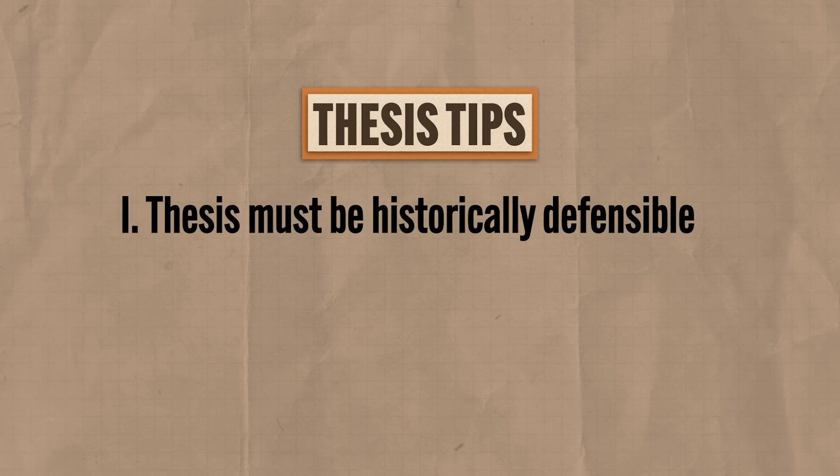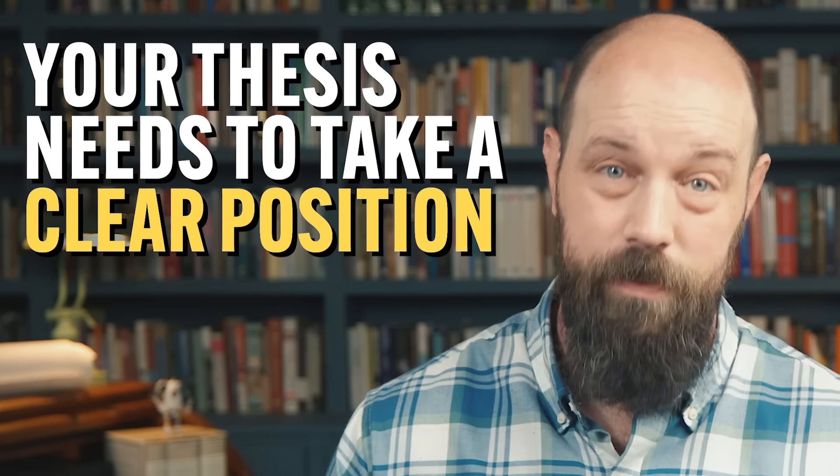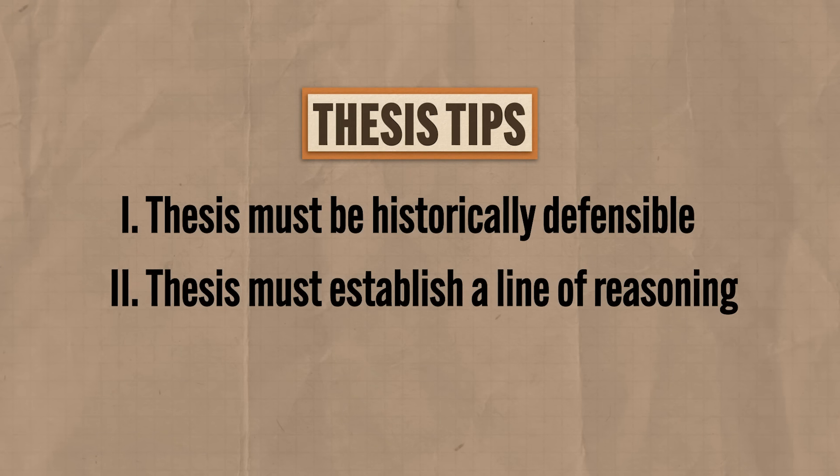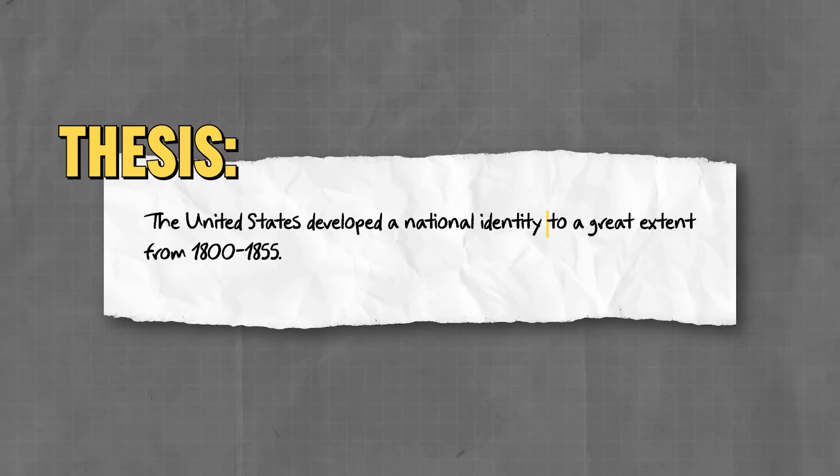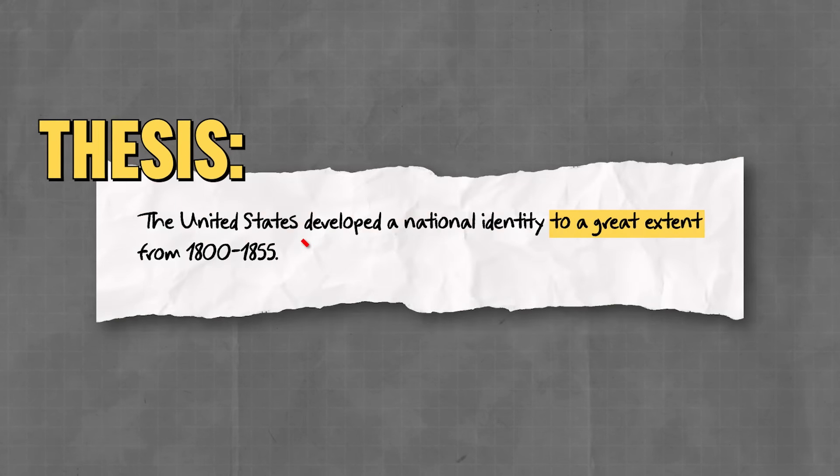First, the thesis must be historically defensible — you have to take a position. Was the English Civil War primarily caused by religion or politics? Did imperialism affect economies greatly or not much at all? Your thesis needs to take a clear position and also be factually correct — if your thesis says the Emancipation Proclamation caused European imperial expansion, that's not true in any universe. Second, the thesis has to establish a line of reasoning, meaning you demonstrate how you're going to prove your argument by dropping vocabulary into your thesis. A claim like 'the United States developed a national identity to a great extent from 1800 to 1855' takes a position but does not establish a line of reasoning, so it would not earn the point.